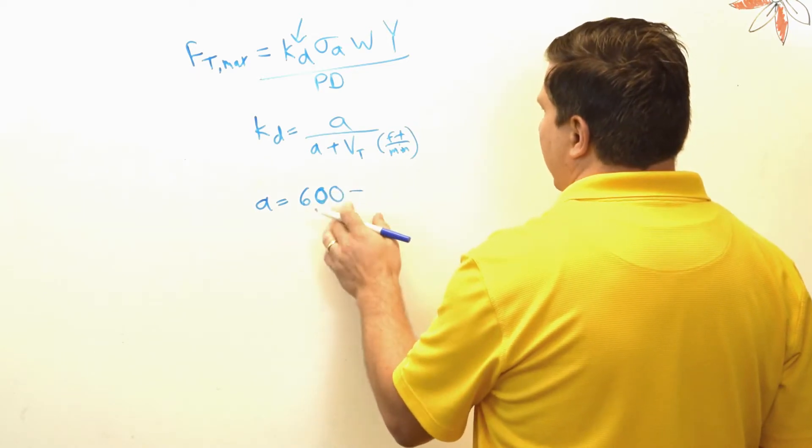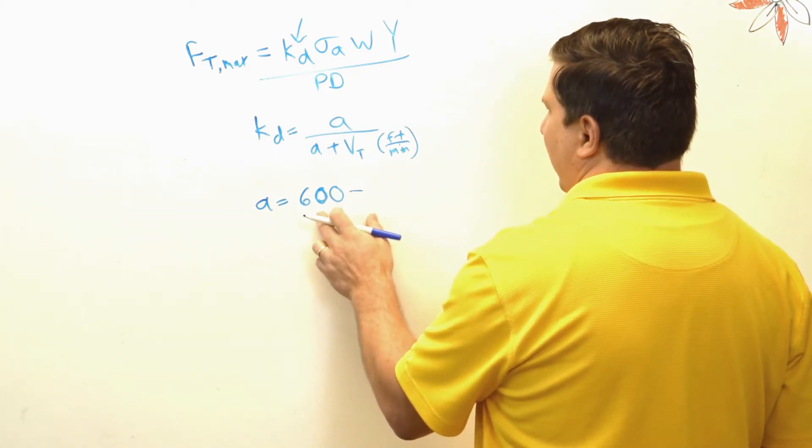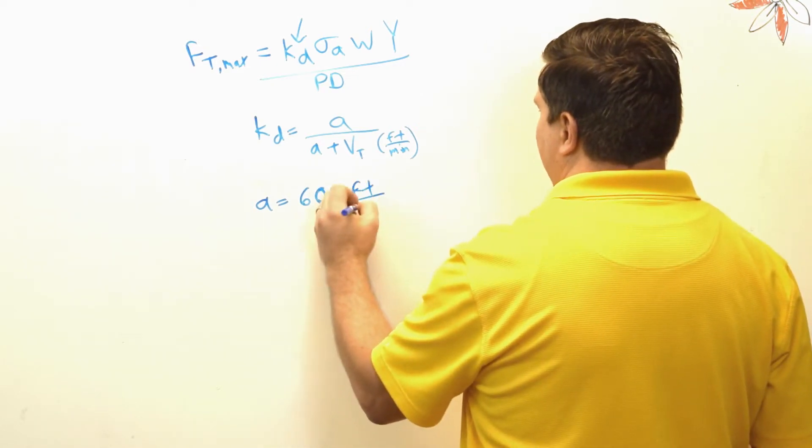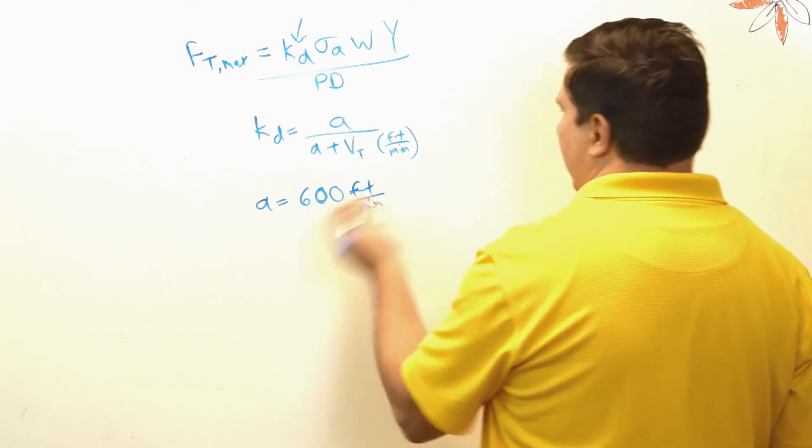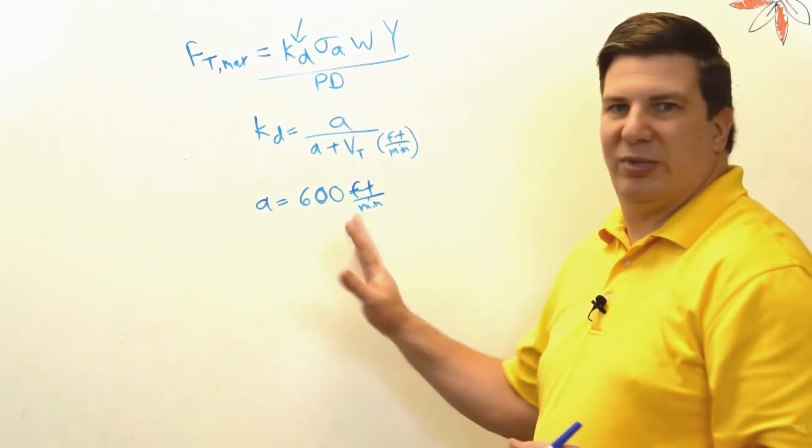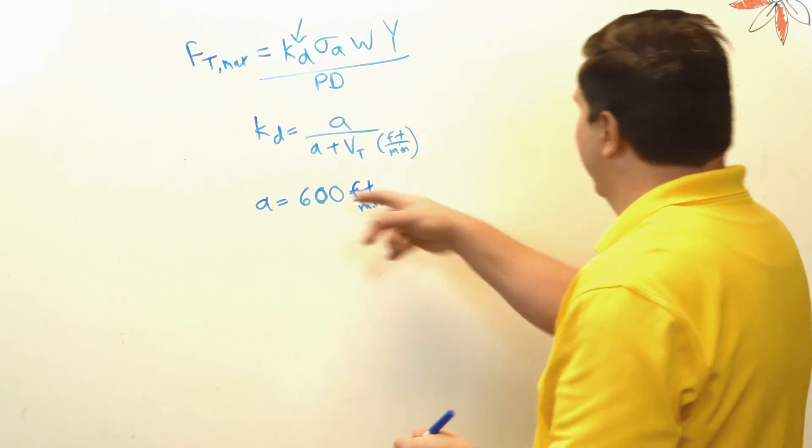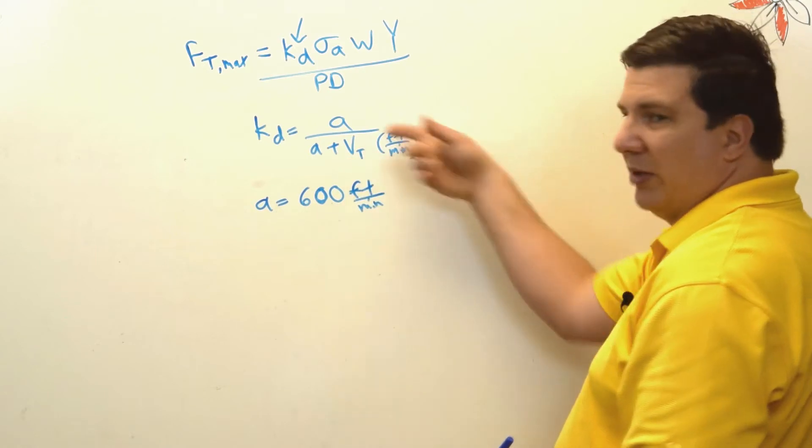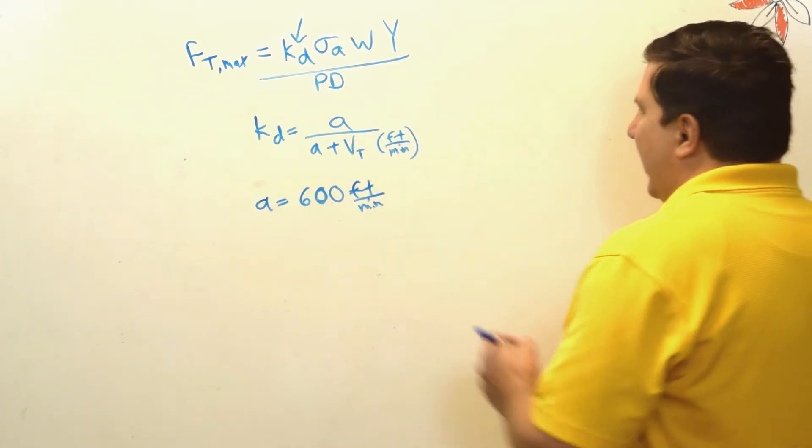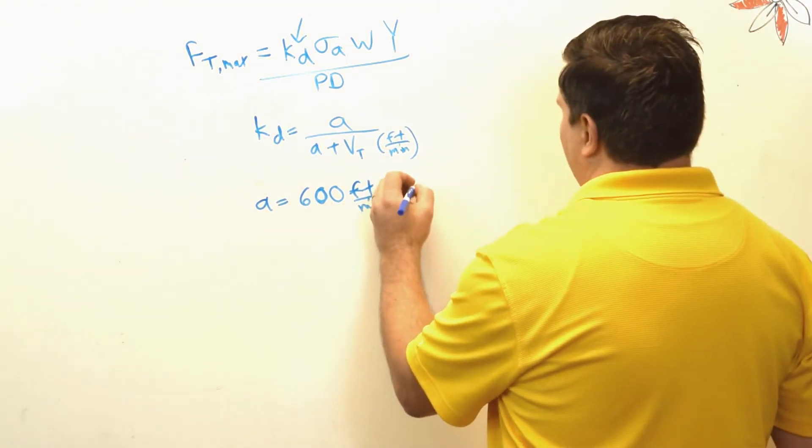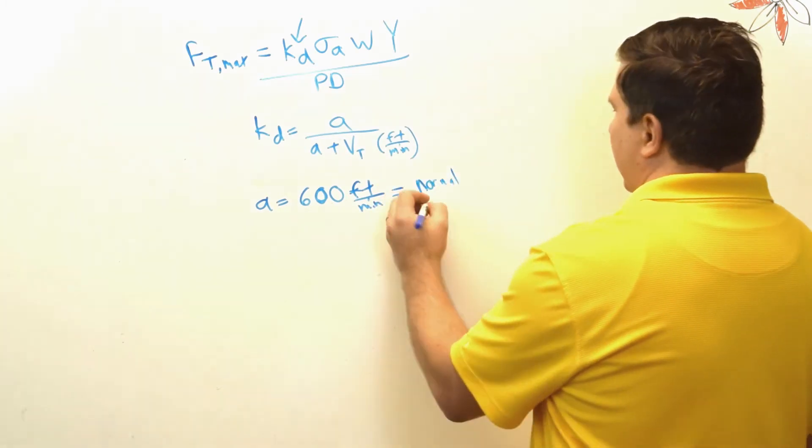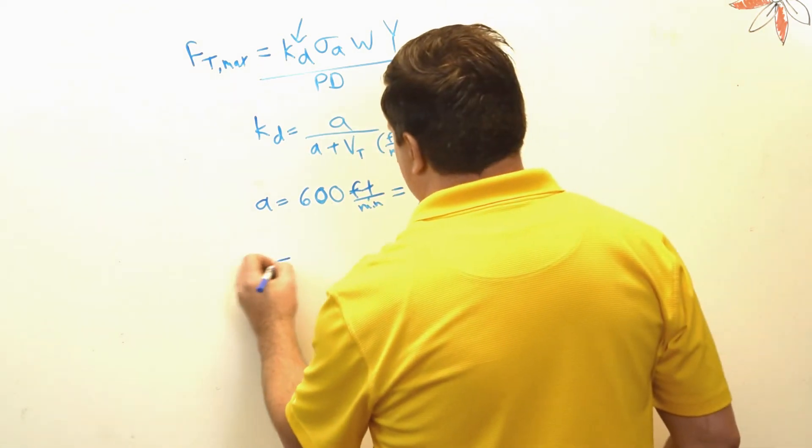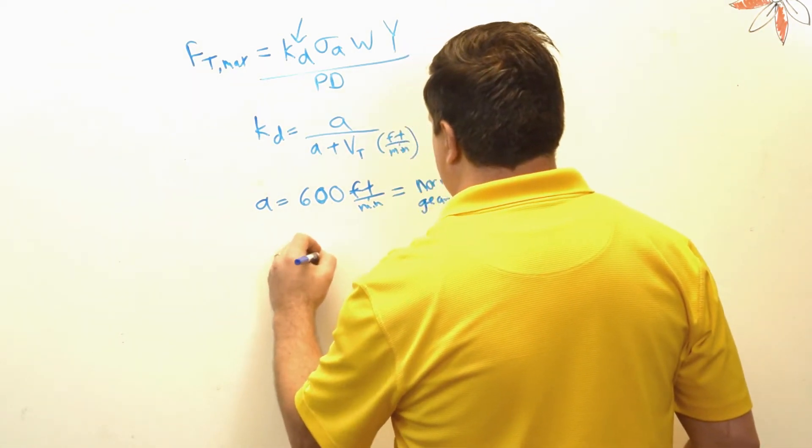Even though this is a number, you treat it as essentially feet per minute, that way all of our units cancel out. It kind of doesn't mean anything, but we're going to assign the units just so we can add 600 feet per minute plus whatever feet per minute to get an answer. This is going to be for normal gears. If we have precision gears, we're going to use a number double to that, 1200 for precision.